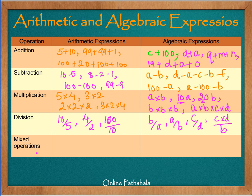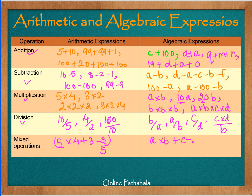If we go for mixed operations — involving addition, subtraction, multiplication and division — an arithmetic example would be: 5 into 4 plus 3 minus 2 divided by 5. To convert this into an algebraic expression, we can write: a into b plus c minus b by a. You can also use a constant, like 10 minus 1 by 2.